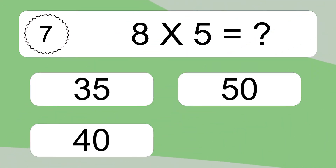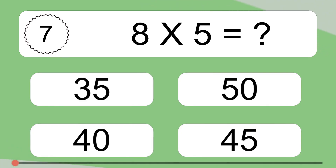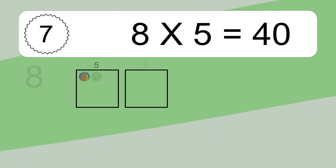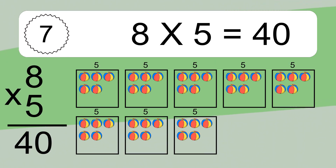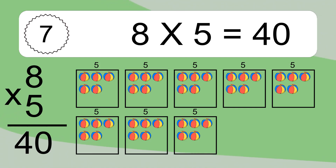8 times 5 equals what? 8 times 5 equals 40. We have 8 boxes, and each box has 5 colorful balls inside. If you count all the balls in all the boxes together, you will have 8 times 5 balls. This equals 40 balls.